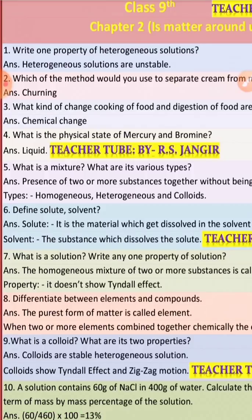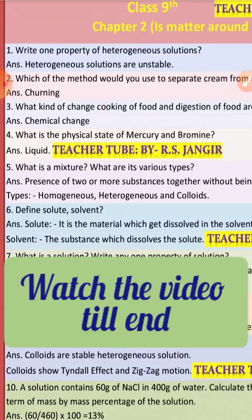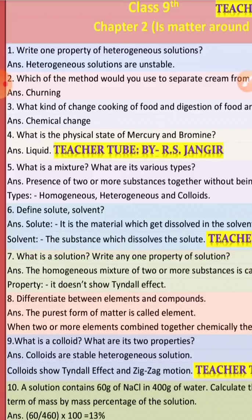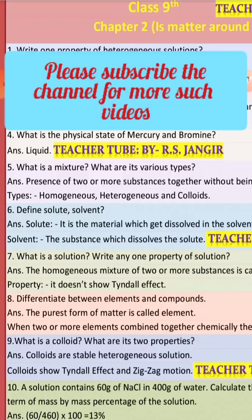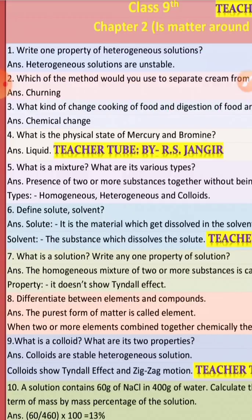Question number four: What is the physical state of mercury and bromine? At room temperature, mercury and bromine are in liquid state. Question number five: What is a mixture? What are its various types?